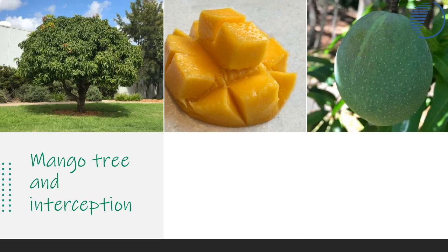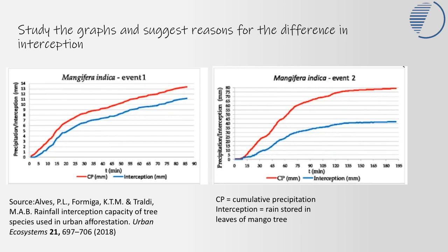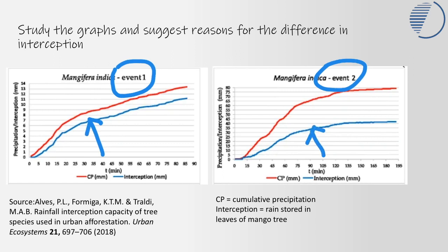One well-liked fruit is the mango. Here's a picture of a mango tree, an unripe fruit, and a mango ready to eat. These two graphs are from recent research done in 2018 on the mango tree. The mango tree was involved in two precipitation events — event one and event two. Study these graphs and suggest reasons why the blue line (interception) in this tree differed between the two rainfall events. Rainfall is shown in red. Press pause now and think about this before you move on.